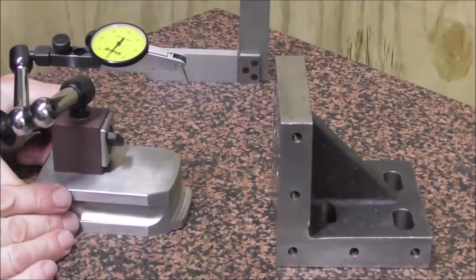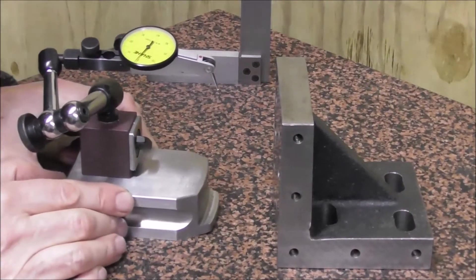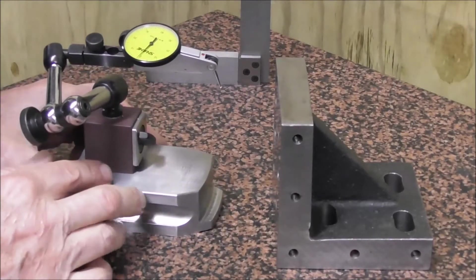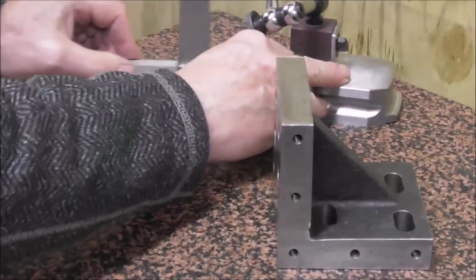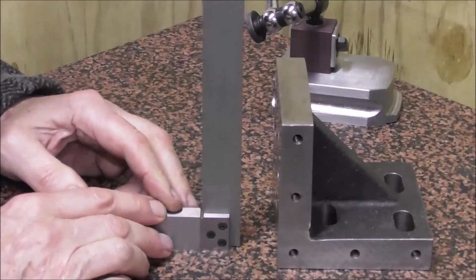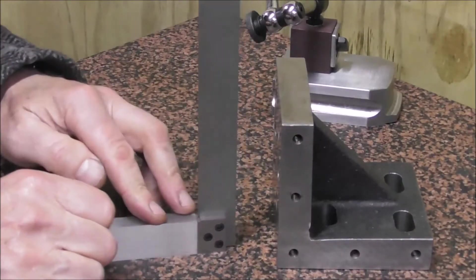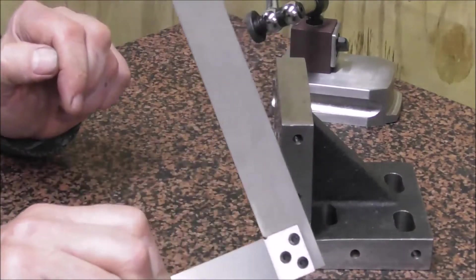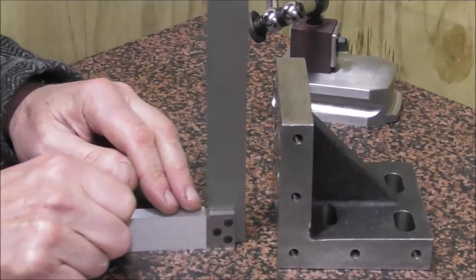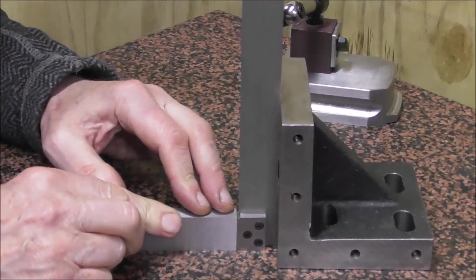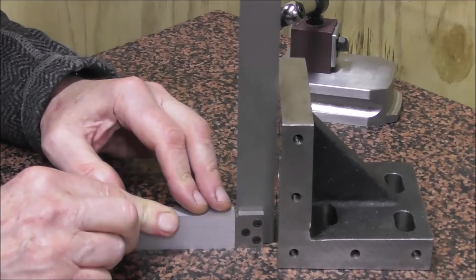Well, first off, let's talk about how the squareness comparator works for those of you who are unfamiliar with it. So traditionally, I used to check if something was square by using a reference square, put it up against it, look through and look at the light and see how square it was.